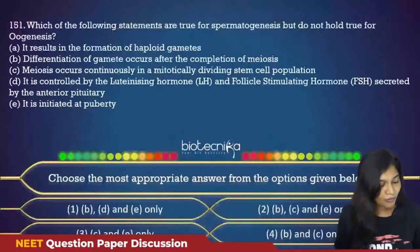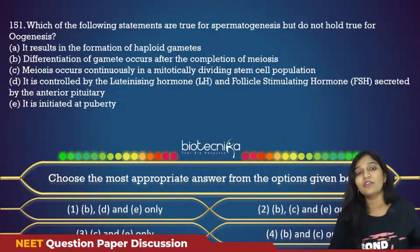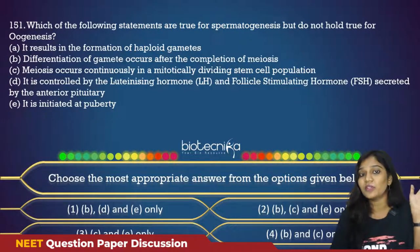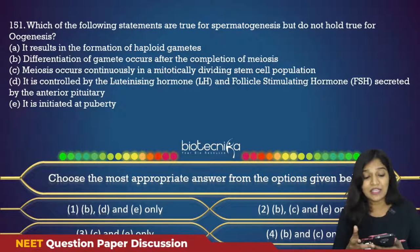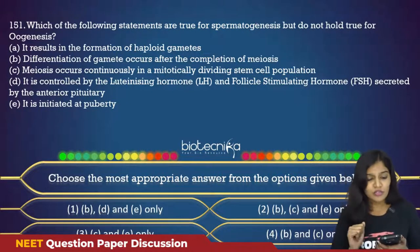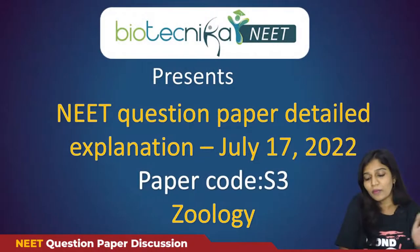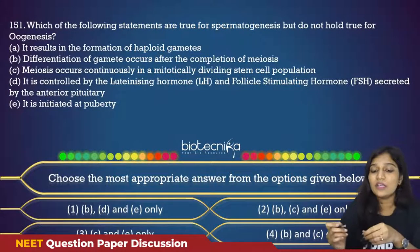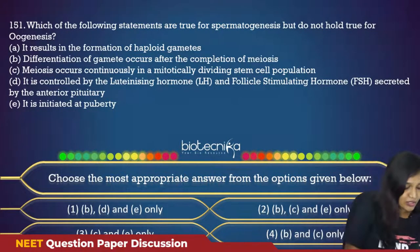Let's proceed to the questions. The question paper was not that difficult; it was easy but tricky because you have to look at questions that ask about incorrect statements. If you observe carefully, the paper is really easy, especially zoology questions, where there is a great opportunity of getting good marks. The first question, Q151 (paper code S3): which of the following statements are true for spermatogenesis but do not hold true for oogenesis?